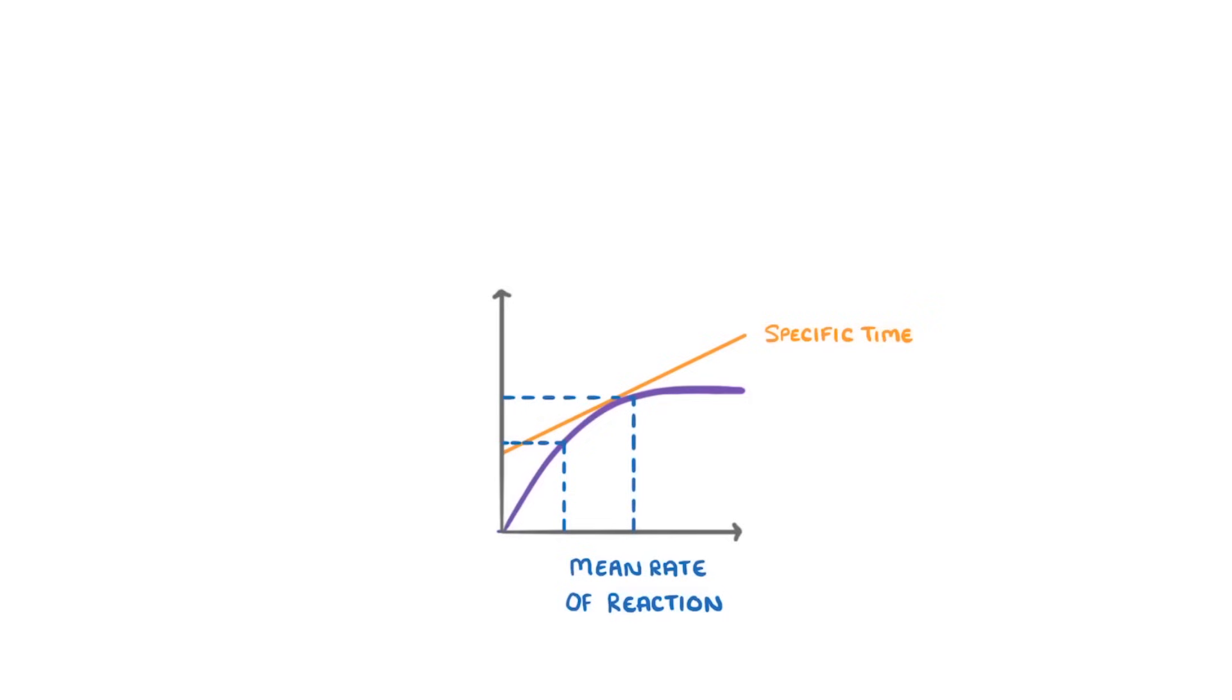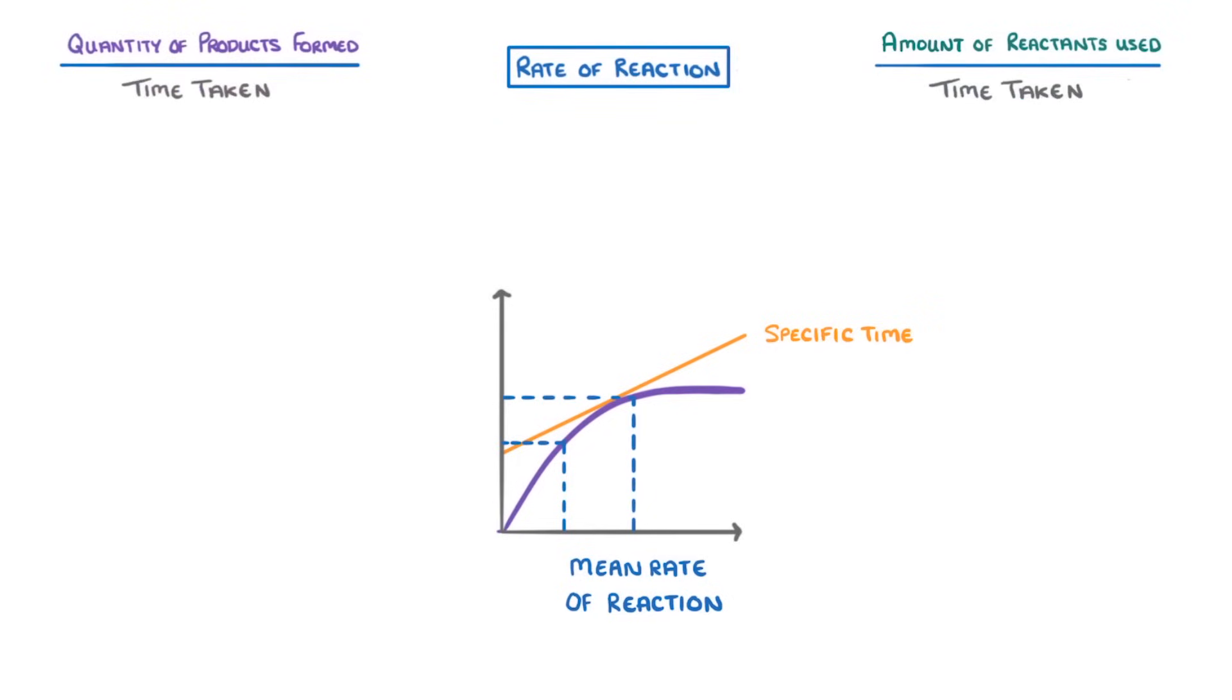We saw in the previous video that we can calculate the rate of reaction by dividing either the amount of reactants used, or the amount of product formed, over the time taken for that change to occur.